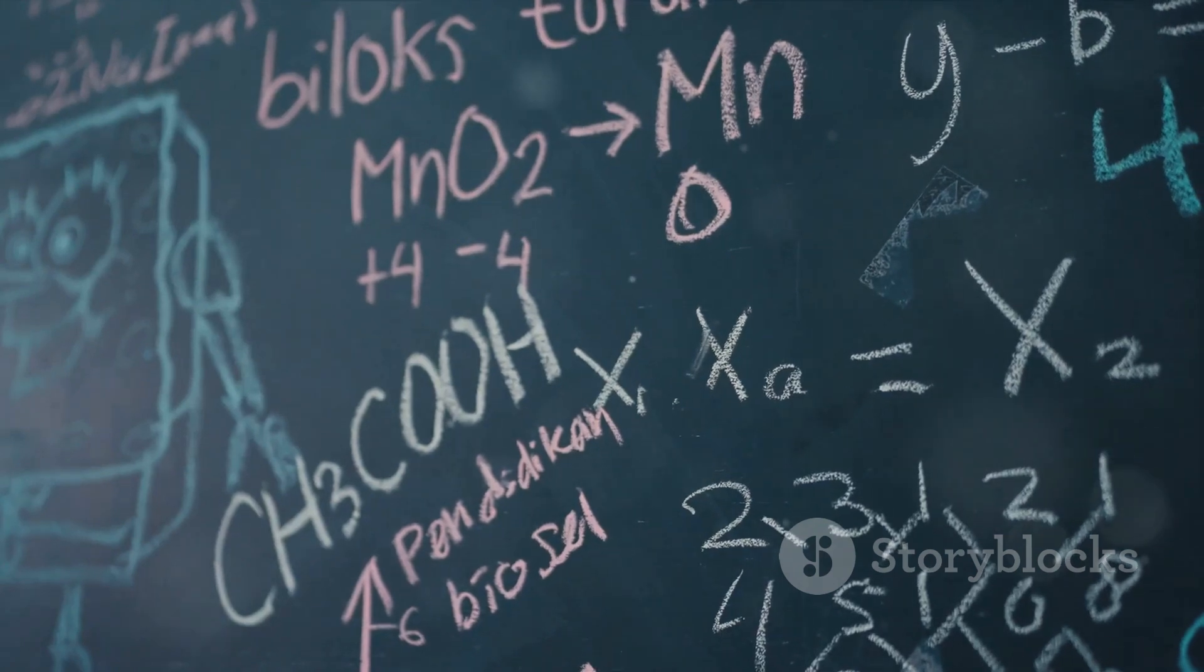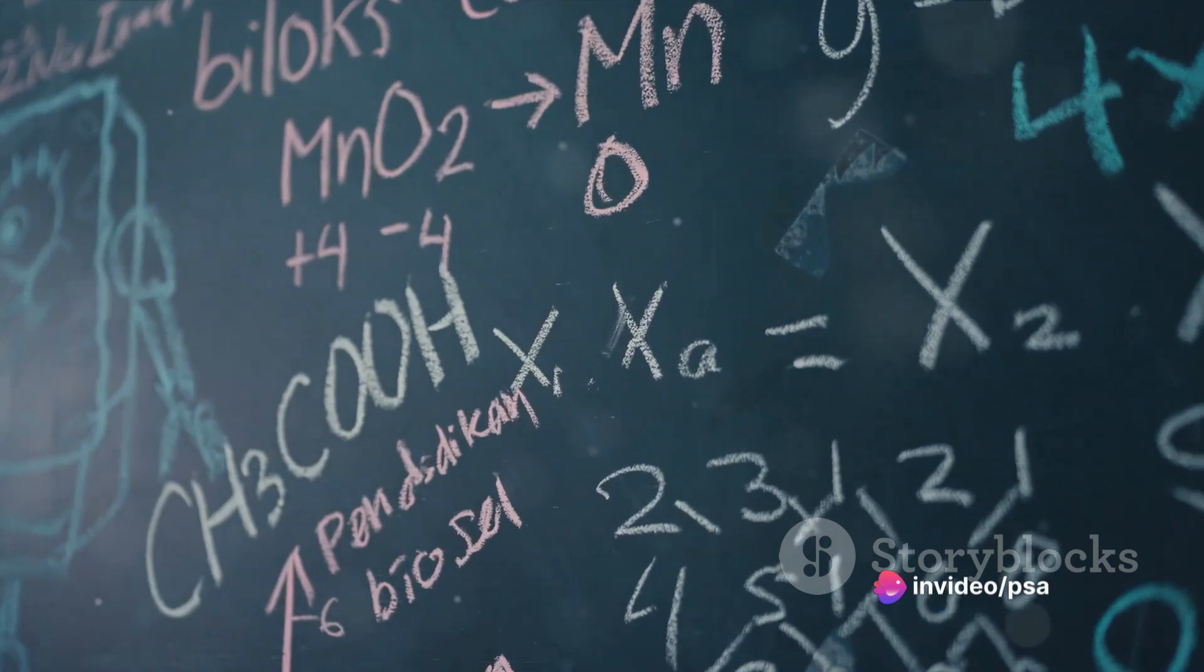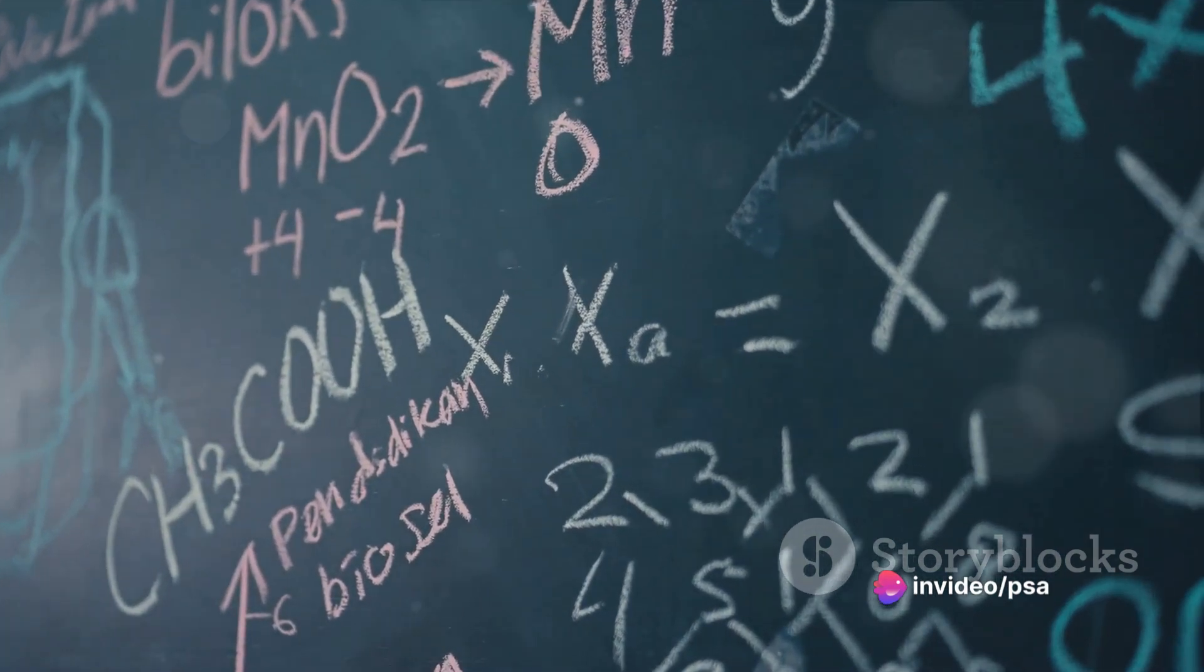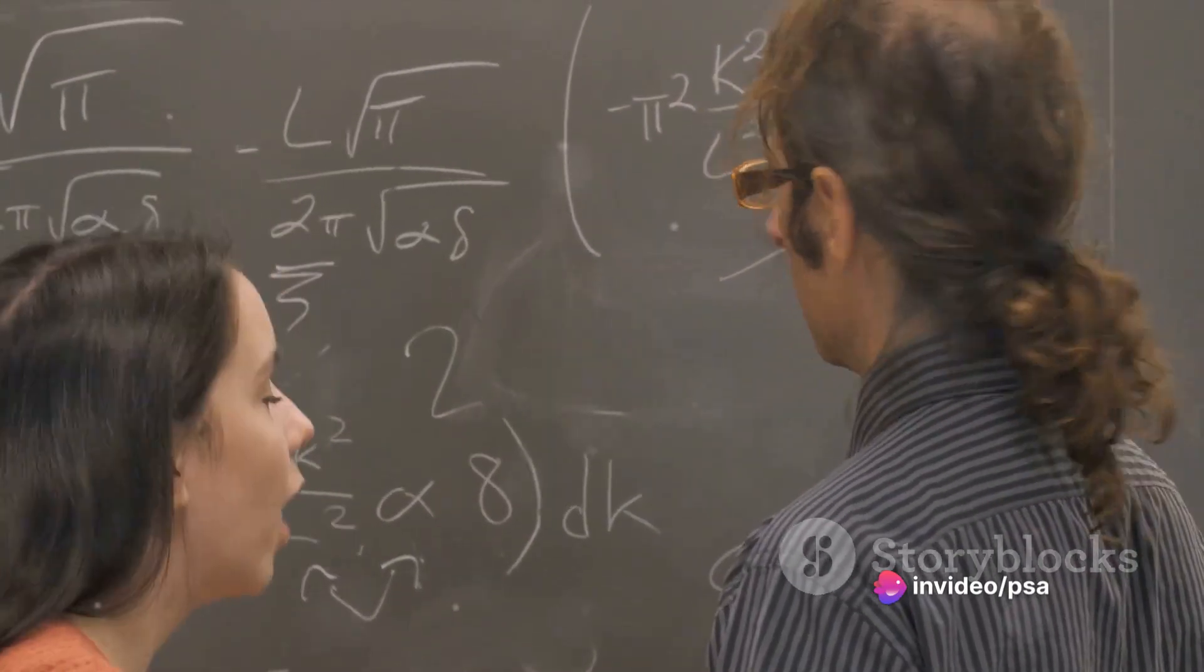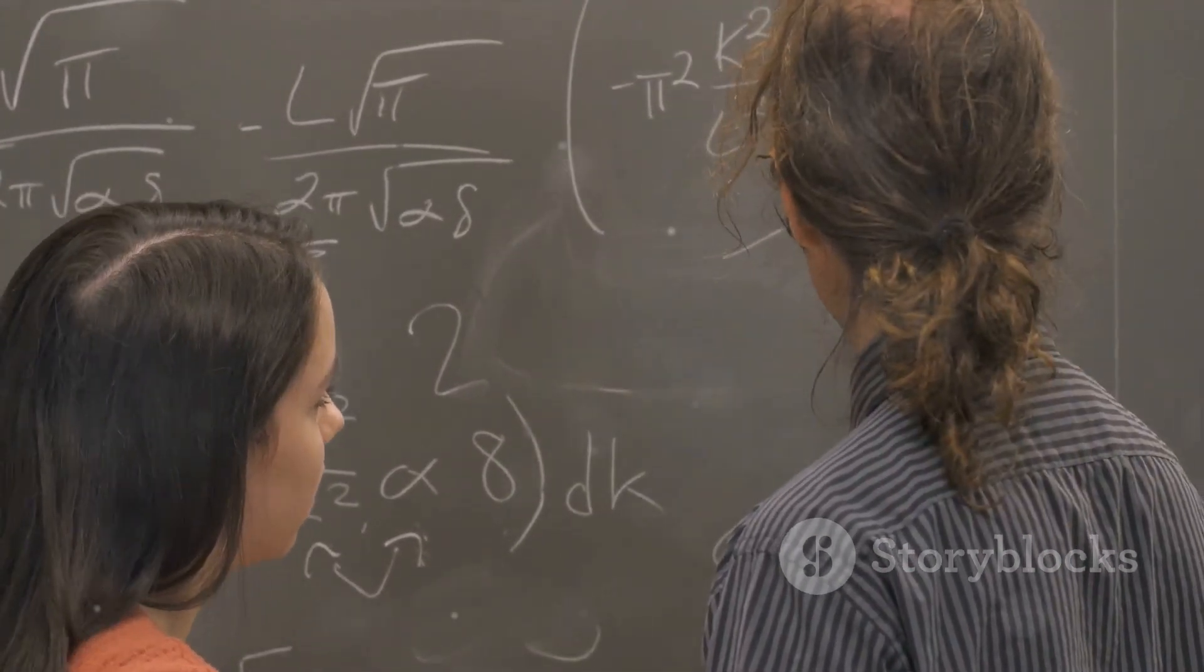And of course, who can forget the Pythagorean identities? Stemming from the Pythagorean theorem, these identities form the basis of so much of what we do in trigonometry. They state that the square of the sine plus the square of the cosine of an angle always equals one.